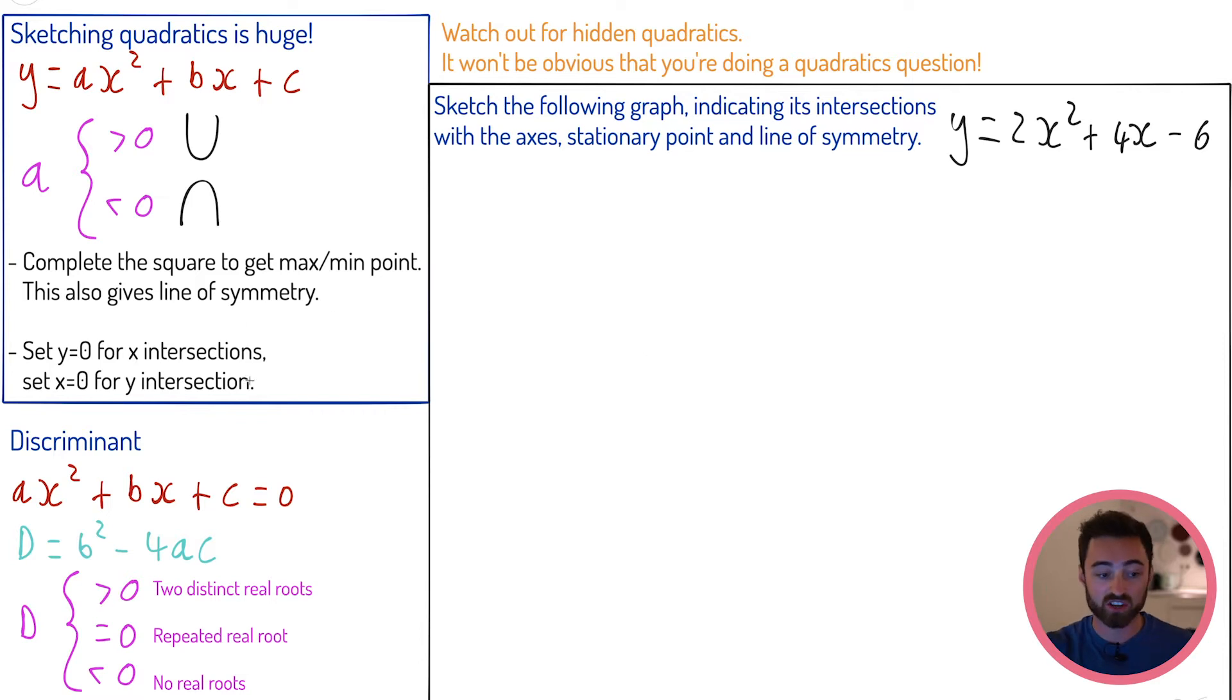This is true for any graph, not just quadratics. To get the intersections, we set y equals 0 to see where it hits the x, and vice versa. When x equals 0, y is going to equal, well this is the easy one, because that goes to 0, that goes to 0, it's going to be minus 6. We know that it hits the y-axis at minus 6. Let's get the x intersections. If y is 0, then it's not quite as simple. We've got an equation to solve. We've got 2x² + 4x - 6 = 0. I'm noticing that I can cancel 2 from both sides. If I divide both left and right by 2, I'm going to get x² + 2x - 3 = 0.